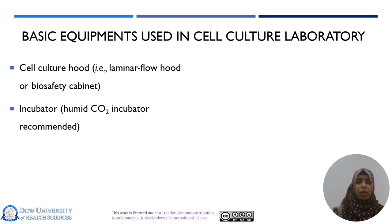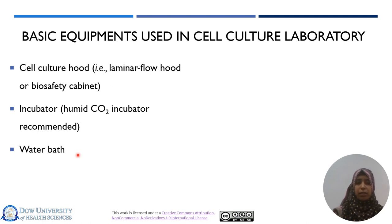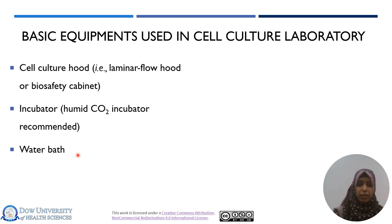The second equipment is the incubator. In most cases, a humid carbon dioxide incubator is recommended. Third is the water bath, because whenever you are using media, FBS, trypsin, growth factors, or other additives, you need to maintain the temperature of that media close to 37 degrees centigrade. Most mammalian and murine origin cell lines require 37°C for optimal growth, so all media and chemicals must be warmed in the water bath before use.